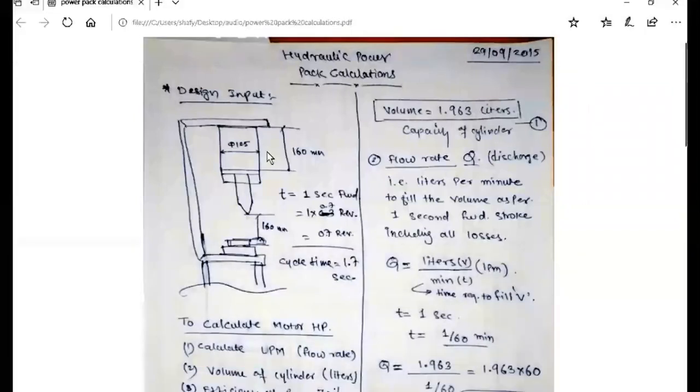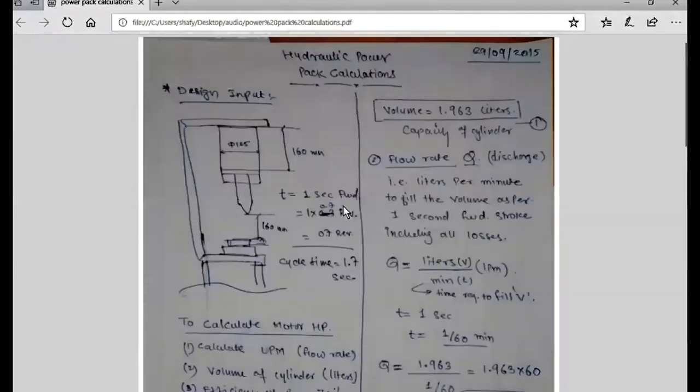So basically the desired input is your cylinder stroke, at what time it is traveling. Our cylinder stroke is in one second forward, so it's going 160 mm in one second and radius is 125.